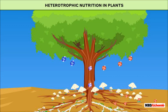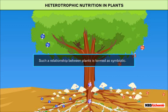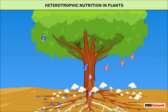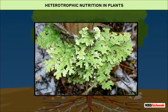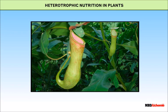On the other hand, some plants interact with each other in a beneficial way. Such a relationship between plants is termed symbiotic. For example, lichen is a symbiotic relationship between algae and fungi.